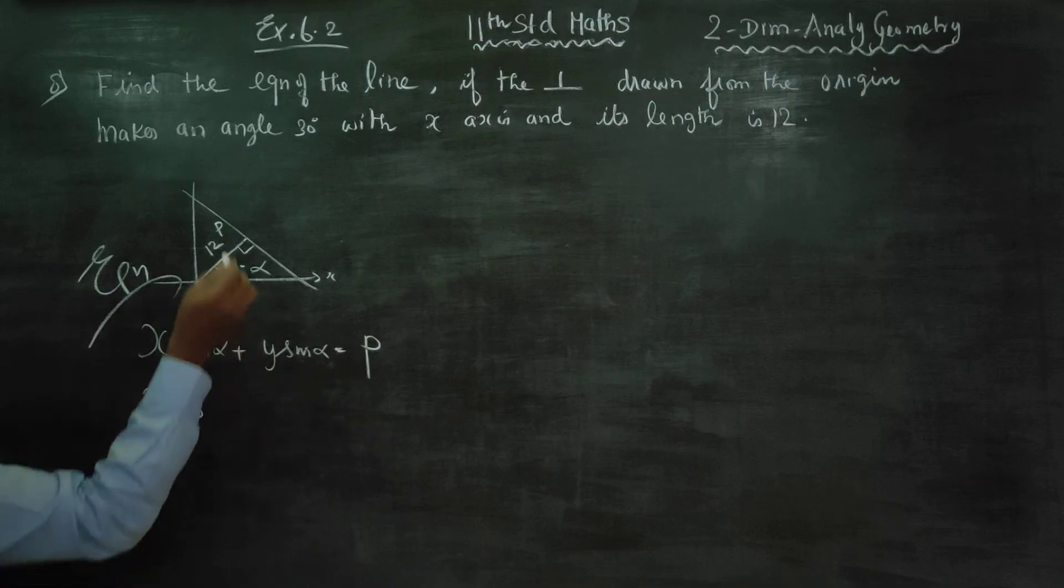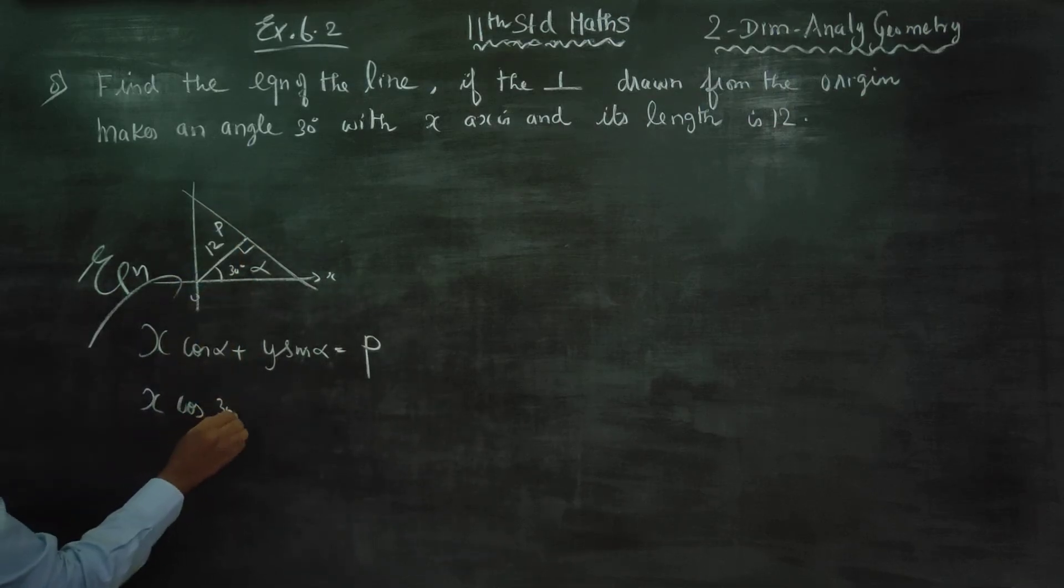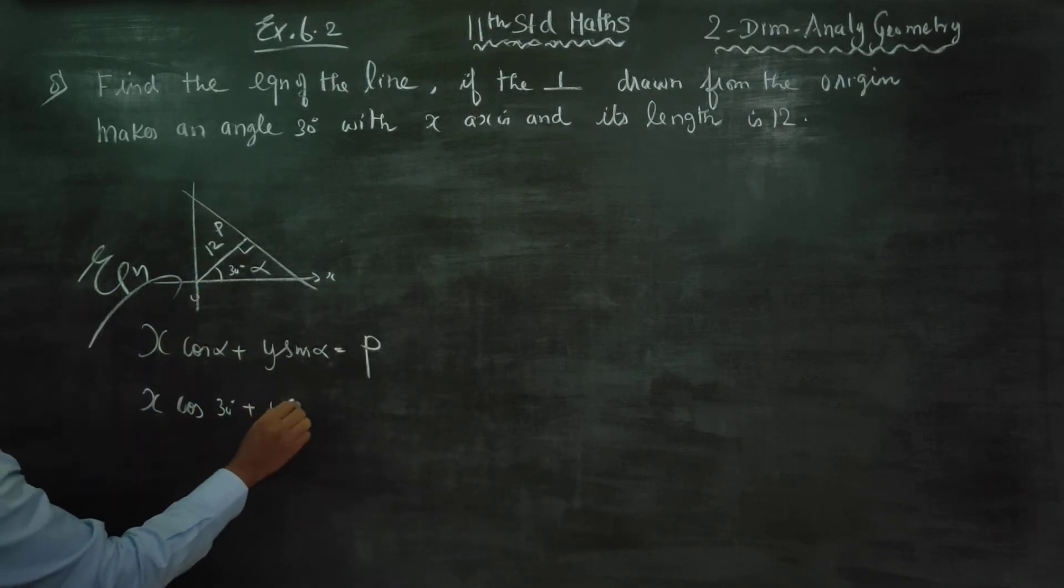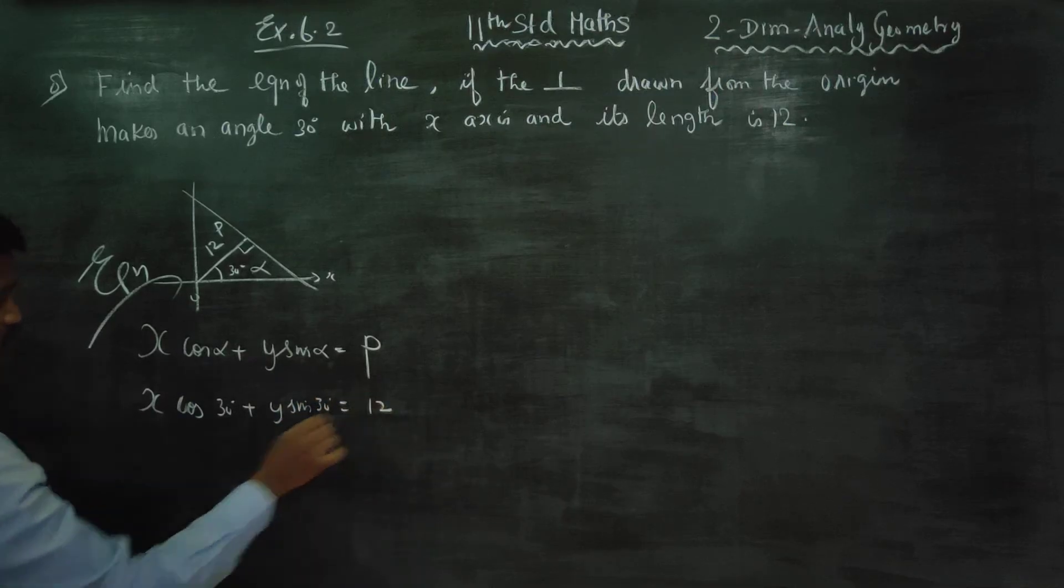x, what is my alpha? Alpha is 30 degree plus y sin alpha is 30 degree is equal to p is 12.